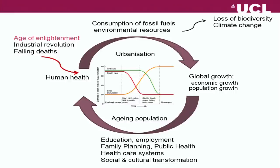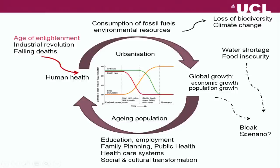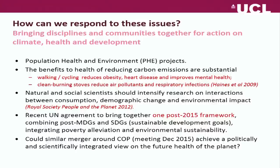There are huge implications for the ageing population on human health and demand for healthcare and social care. We know that climate change and loss of biodiversity is continuing, and if coupled with water shortages and food insecurity, there is the real possibility of Malthusian-like scenarios where more and more people cannot have their basic needs met. It seems we need a second age of enlightenment to guide us in different ways. Organisations and declarations mainly reinforce the message about the need to reduce both consumption and population growth — it's not either or.